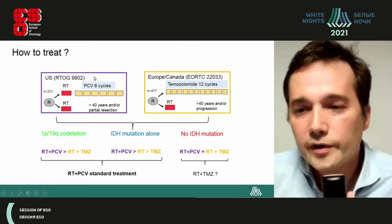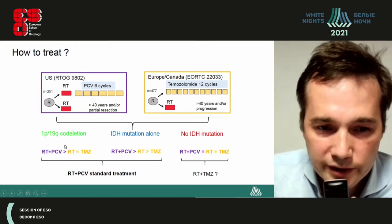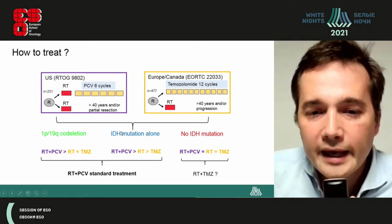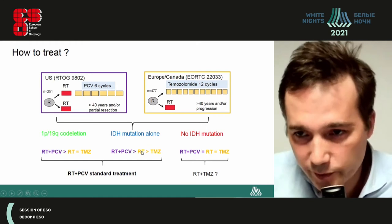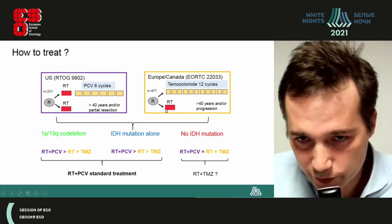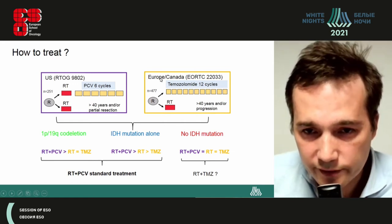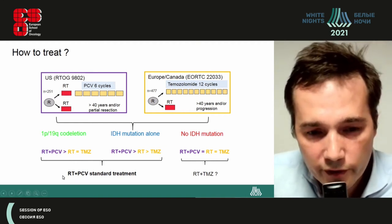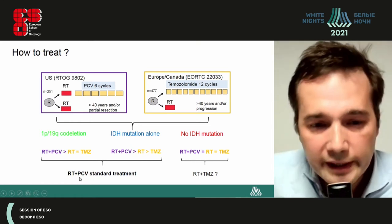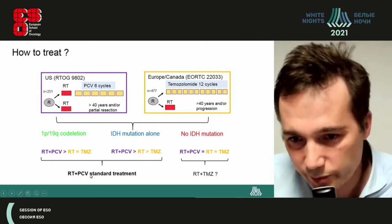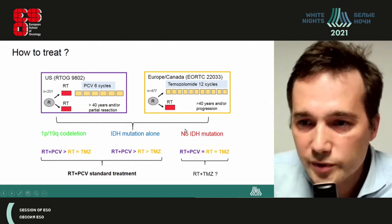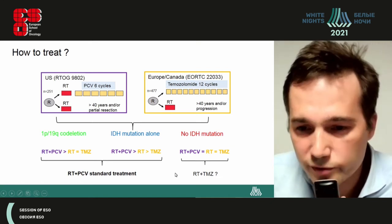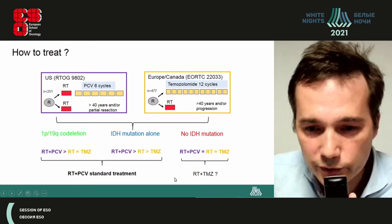Combining the results of these two studies, we can make the likely assumption that in oligodendrogliomas, RT plus PCV is superior to RT alone, which seems equivalent to temozolomide. Currently, the standard of care for patients with IDH mutant low-grade gliomas is RT plus PCV. Regarding the treatment of IDH wild-type low-grade gliomas, it is quite controversial, as this is a heterogeneous group of tumours that don't correspond to classical low-grade gliomas.